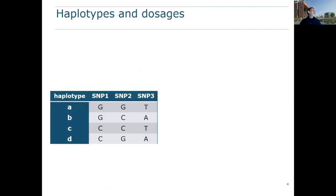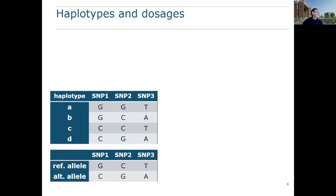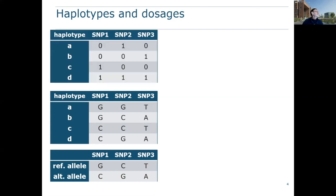Some information about haplotypes and haplotype dosages. Let's say that we have a haplotype consisting of just three SNPs: SNP 1, SNP 2, and SNP 3. We see four haplotypes shown — A, B, C, and D — with the SNP alleles for each of those four haplotypes. It's more convenient to express haplotypes in terms of reference and alternative alleles. If we have that information, we can convert these bases into zeros and ones.